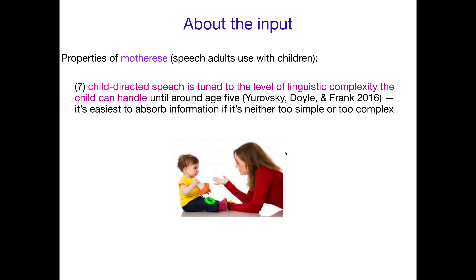Another really fun property is that child-directed speech is tuned to the level of linguistic complexity the child can handle, until around age five. Caretakers unconsciously are extremely sensitive to how complex the things are that the child can actually handle. When talking to a very young child, you use very simple words and very short utterances, whereas with a child closer to age five, you use longer, more complex utterances.